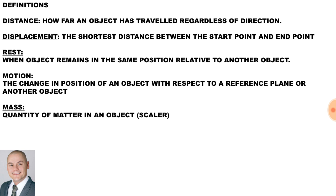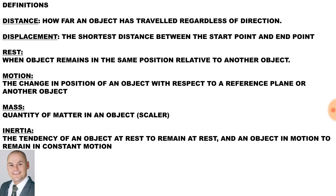Mass. The quantity of matter in an object, such as a scalar quantity. Inertia. The tendency of an object at rest to remain at rest. And an object in motion to remain in constant motion.